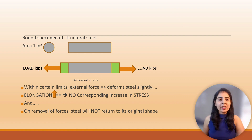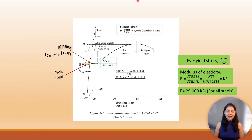Eventually a point is reached when elongation increases with no corresponding increase in stress. This term is known as ductility, and on removal of forces steel will not return to its original shape. Most steels produce this sharp knee formation in their stress-strain diagram.